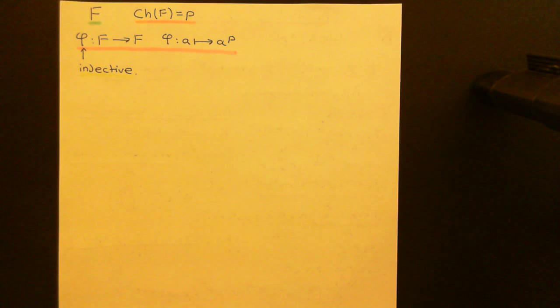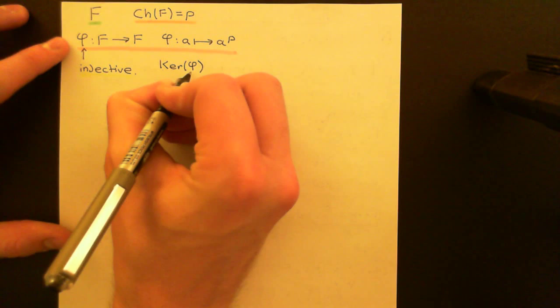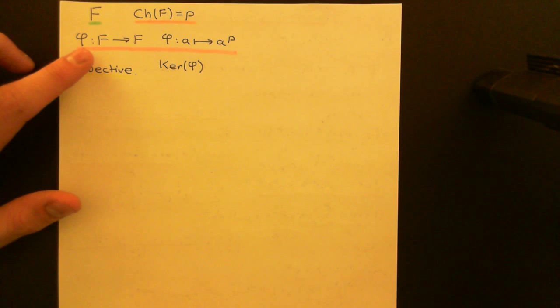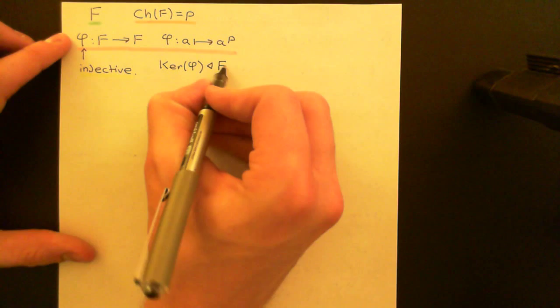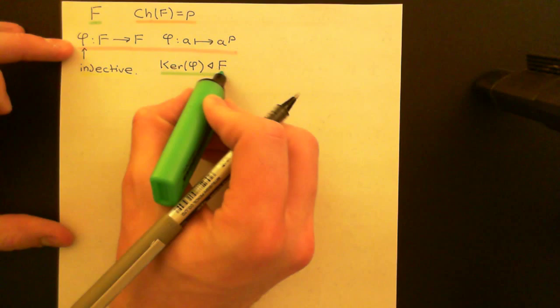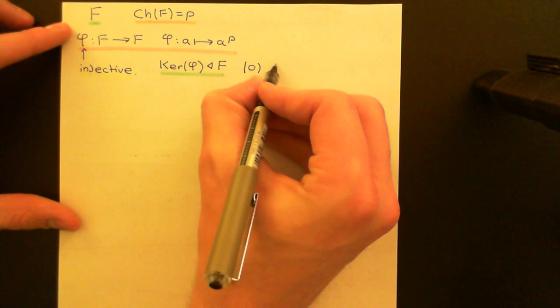Why can we conclude this? This is a nifty little argument. Since this is a ring homomorphism, there must be a kernel. Consider the kernel of the Frobenius endomorphism — it must be an ideal within the domain ring, i.e. an ideal within our field F. But what do we know about the ideal structure of a field? There are only two ideals: the zero ideal, containing just zero, and the unit ideal, containing everything in the entire field. So there are only two options for what the kernel can be.